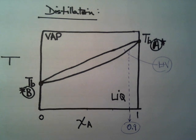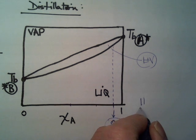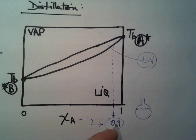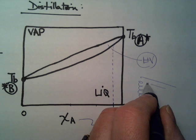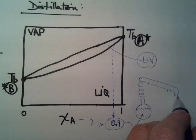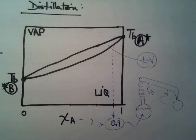Let me move this over a bit to give some room. You have your flask — the mole fraction of A is 0.9, so that's a fraction, not a molarity, and that's what's in the flask as the liquid. We put on our fractionating column, hook up our condenser, which leads down to the collection flask — currently empty — with water in and water out, recirculating.